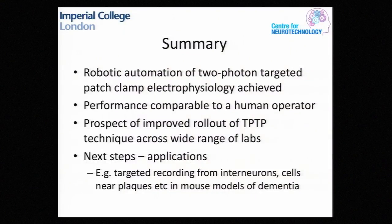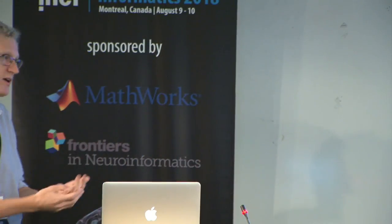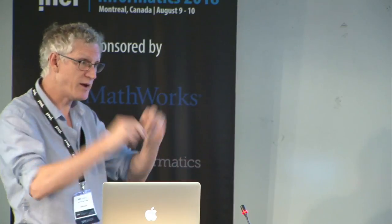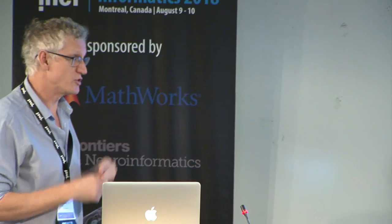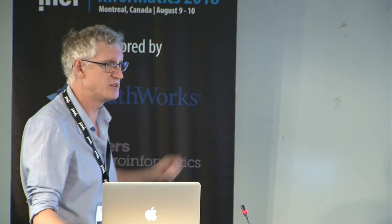It works quite nicely. We've got all the material openly available and we're going to be trying to open up further and build systems for people. Our next steps are using it in combination with calcium imaging to examine a memory task. We've mentioned this project on mouse models of dementia. For that, I'm now going to jump back a bit to calcium imaging. Whole cell patch clamp recording is great for looking at single cells. We're also working on expanding it to multiple cells — I've got a student working on expanding two-photon targeted patching to multiple cells, which I think will add a lot to the potential questions we can use it to ask.